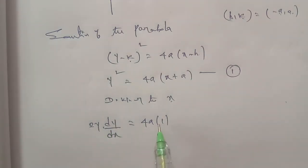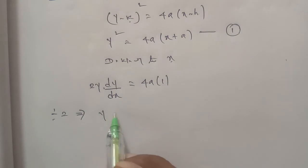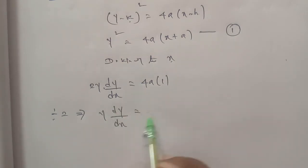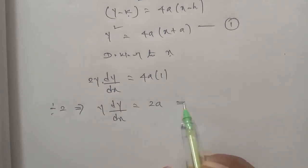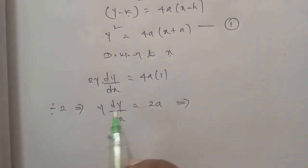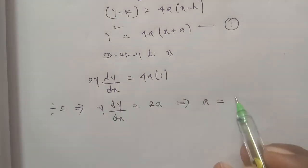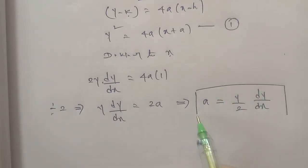Differentiating y squared equals 4a(x plus a) with respect to x: 2y times dy/dx equals 4a. So we get the value of a: a equals y divided by 2 times dy/dx.